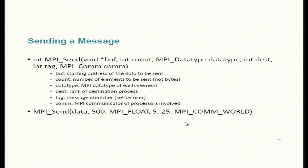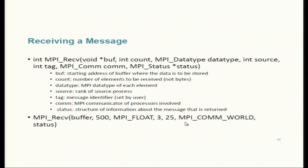In the send call example: we have a float data array and want to send 500 elements starting from element zero — that is 500 times 4 bytes equals 2000 bytes. To send from an offset, specify the address of that element, e.g., &data[9] for the 10th element, and 500 elements from there. Destination is rank 5, a tag value is given, then the communicator. At the receiver side, it says receive from rank 3 with the same tag value, and the extra parameter is status.